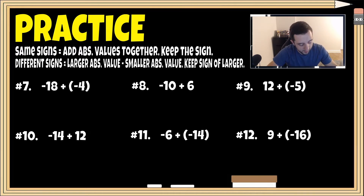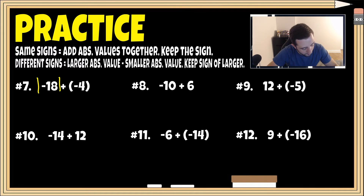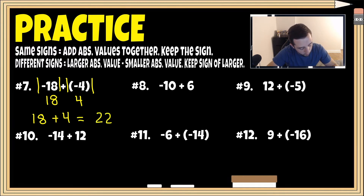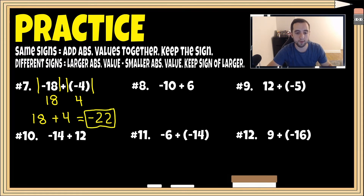For number seven, we have the same signs — both negative. The absolute value of negative 18 is positive 18, and the absolute value of negative four is positive four. Since we have the same signs, we add the absolute values: 18 plus four gives us 22. Since both numbers were originally negative, our final answer is negative 22.